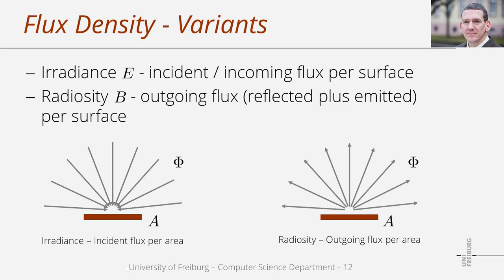If we consider outgoing flux per area, we get the radiosity B. We basically count all photons per time that leave a surface patch A, measuring the overall amount of flux per area that leaves a surface independent from direction. This quantity is relevant in rendering algorithms, in particular for diffuse reflectors. For diffuse surfaces, the amount of outgoing flux is proportional to the angle between the flux direction and the surface normal. So if we know the overall outgoing flux per area—the radiosity—we can deduce the flux in a particular direction. Both irradiance E and radiosity B are used in rendering algorithms.